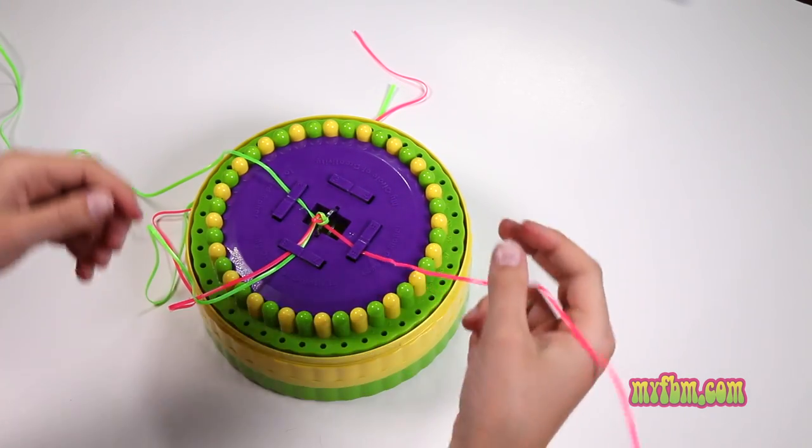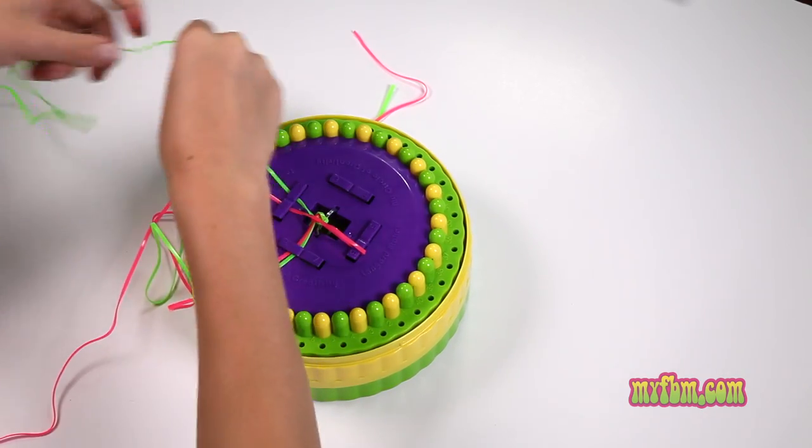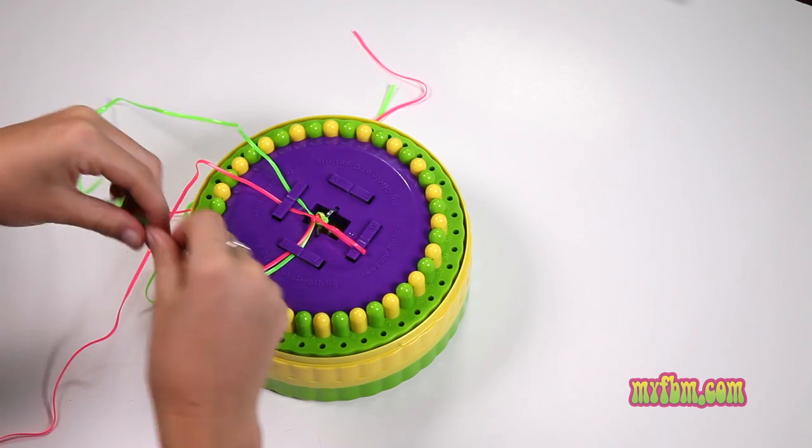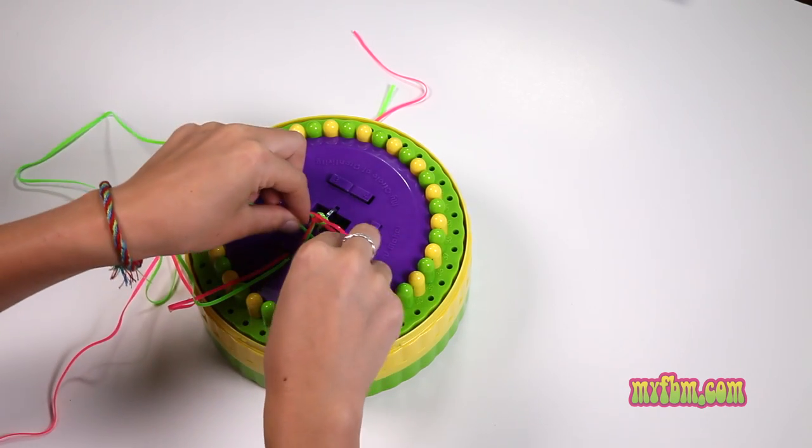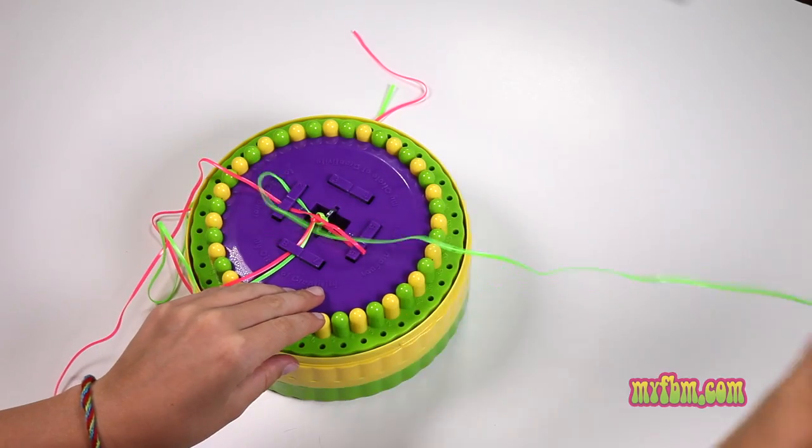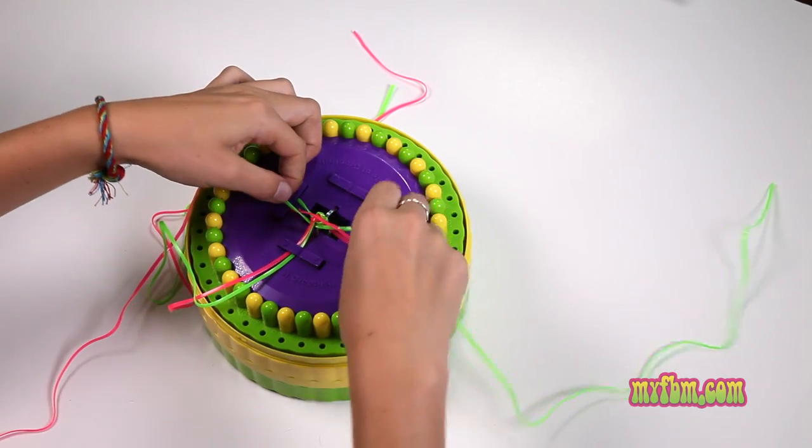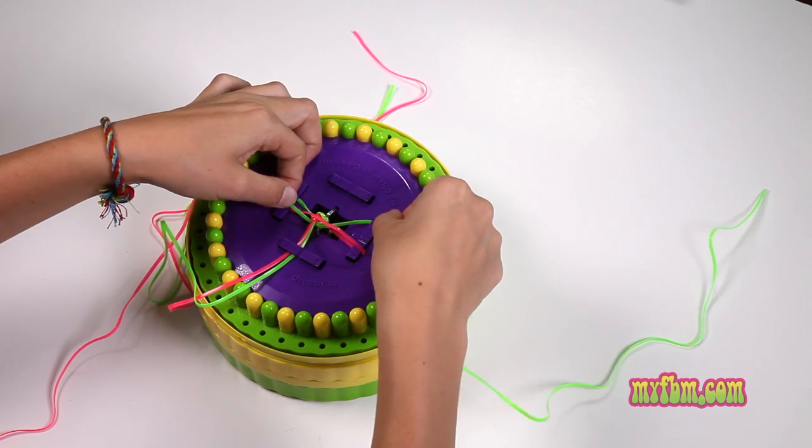Next take the number six and fold it over to the number one, place it under the holder, pick up your number two green lace, go under the number eight and then through the loop you created for number six. Make sure that your green lace is straight and place it under the number five holder.